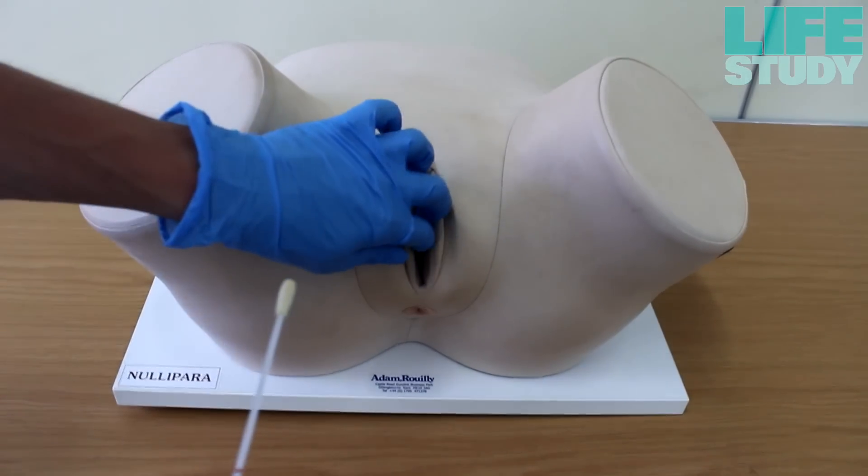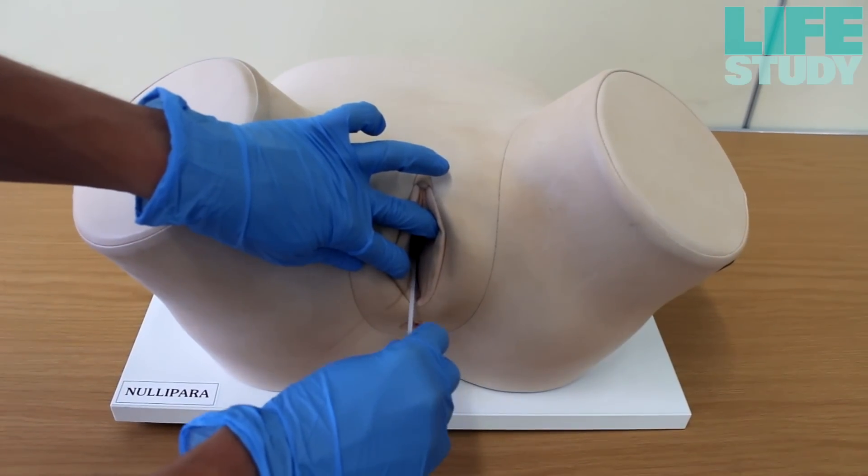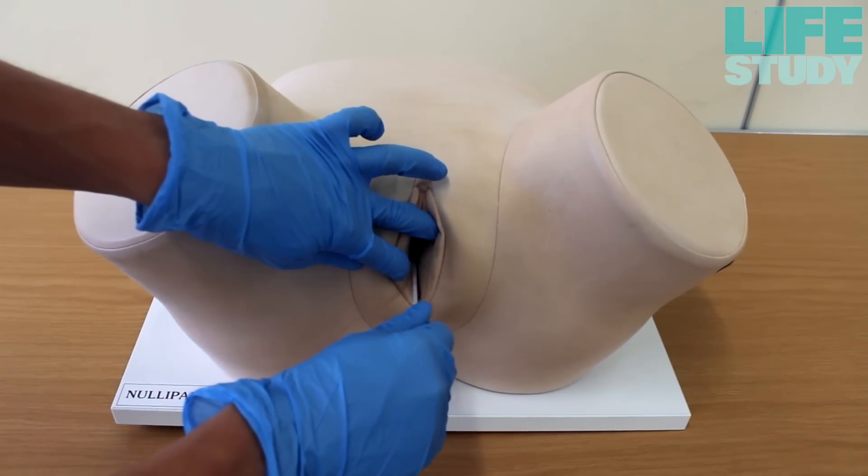Opening the labia first, insert the swab two inches into the vagina. Be careful not to touch the swab on any other surface. Rotate the swab several times.